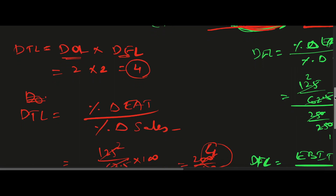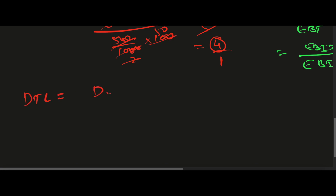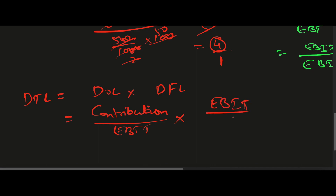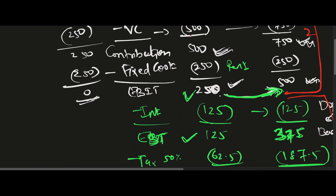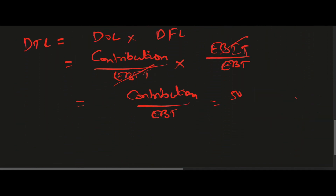There is one more derived formula for DTL in the base case. Degree of Total Leverage equals DOL × DFL, which is (Contribution / EBIT) × (EBIT / EBT). EBIT cancels out, leaving Contribution divided by EBT. Here, Contribution is 500 and EBT is 125, so 500 divided by 125 equals 4 — all methods confirm the same answer.